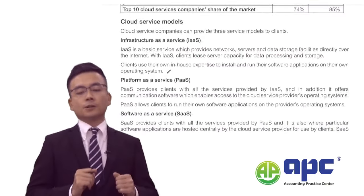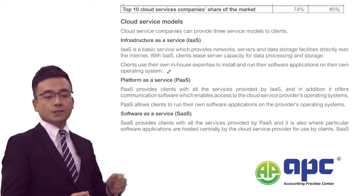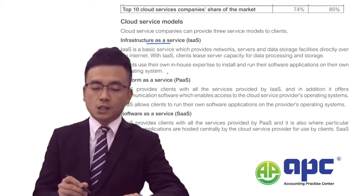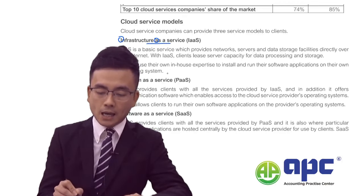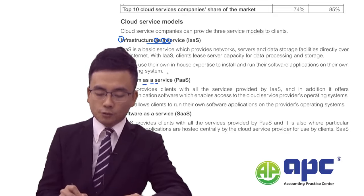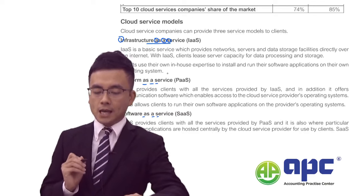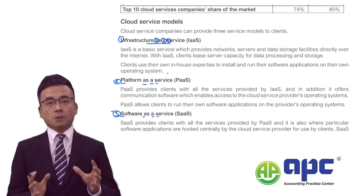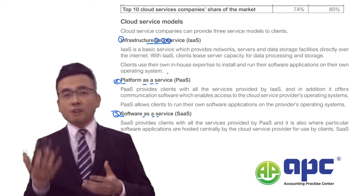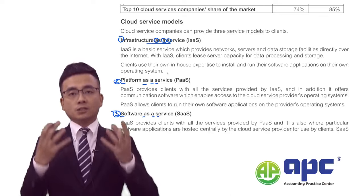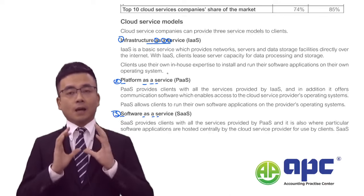Moving on, the pre-seen describes different cloud service models: Infrastructure as a Service (IaaS), Platform as a Service (PaaS), and Software as a Service (SaaS). From the ACCA's point of view, you don't need to be an expert — just understand the basic idea. These are the three models we need to understand.